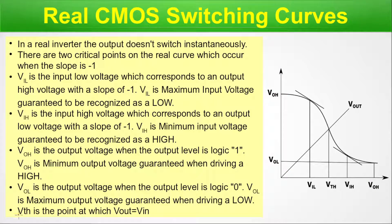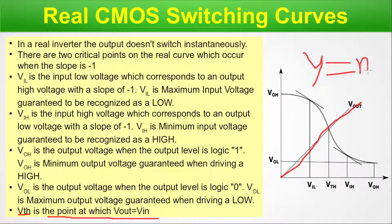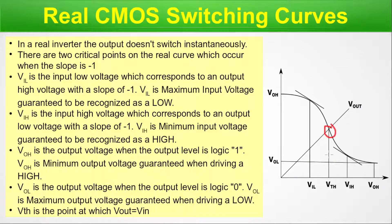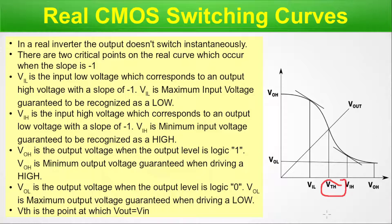VTH, the threshold voltage, is the point at which V out equals V in. On the graph, this corresponds to the point where the switching curve intersects the line V out = V in — like a Y = MX format, a straight line. At this intersection point we have V out equal to V in, and this is the threshold voltage.